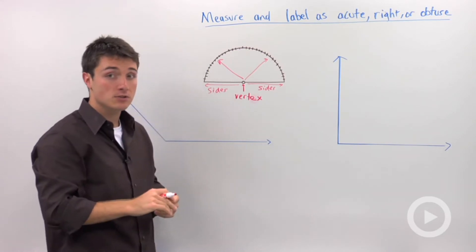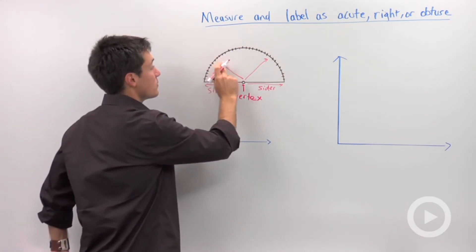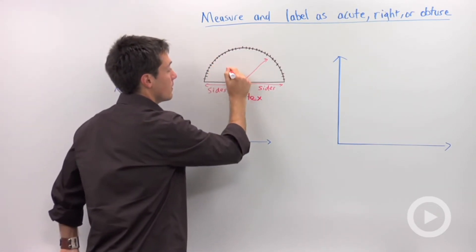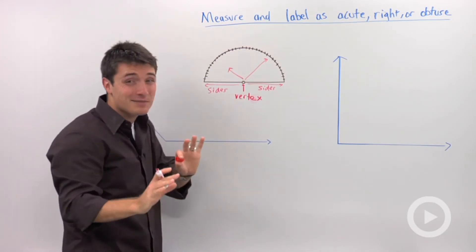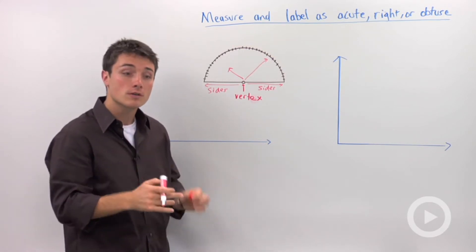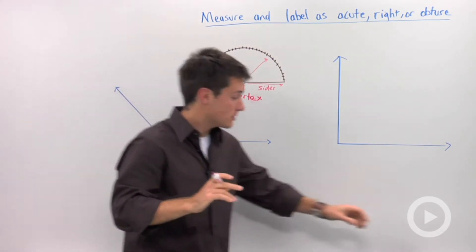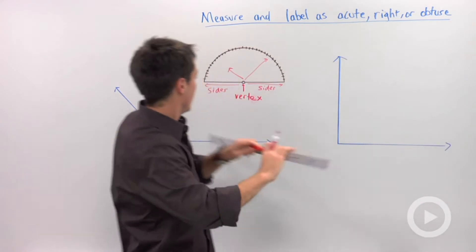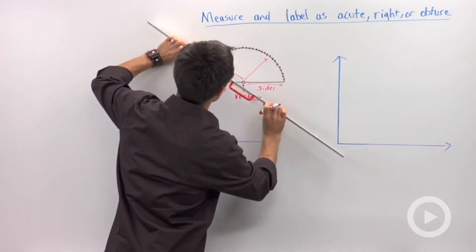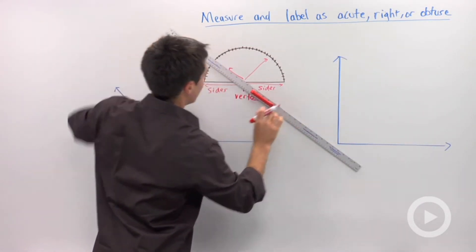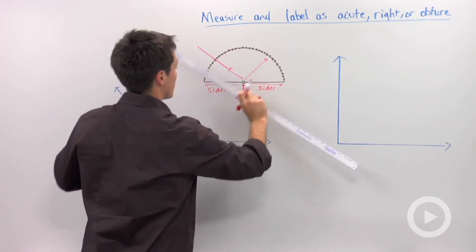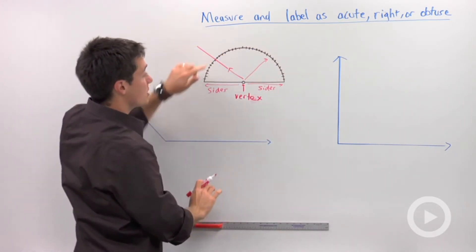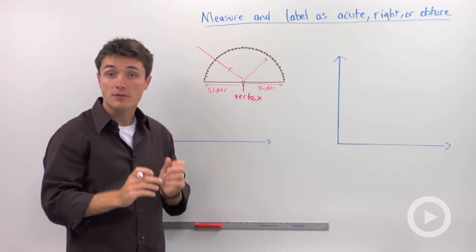Now one key thing that students kind of forget is let's say you're measuring an angle that only goes there. I'm going to guess, but I'm not really quite sure what the angle measure is. What you need to do then is to grab your straight edge, and you're just going to extend that ray. Extend it all the way until you can actually give yourself a very accurate reading of the degree measure.